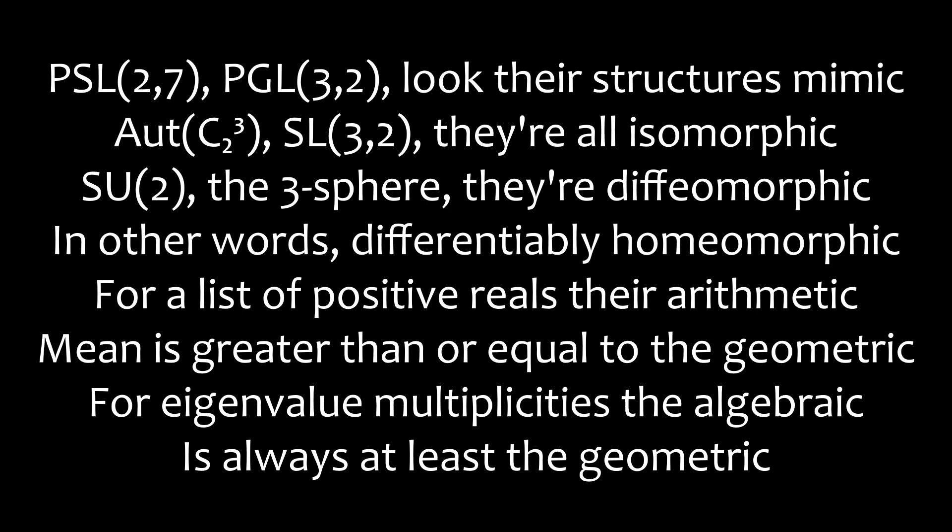SU2, the 3-sphere — they're all isomorphic; in other words, differentially homeomorphic. For a list of positive reals, the arithmetic mean is greater than or equal to their geometric mean. For eigenvalue multiplicities, the algebraic is always at least the geometric.